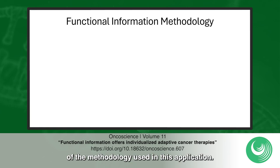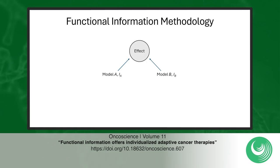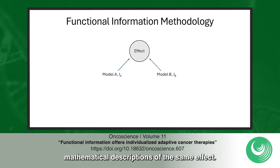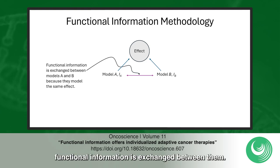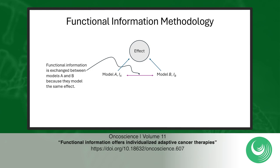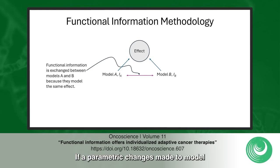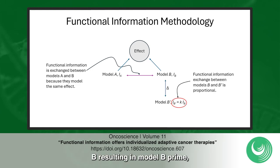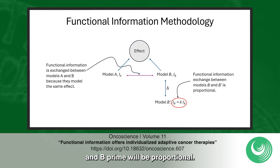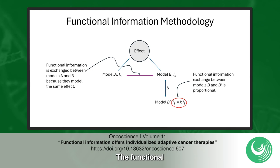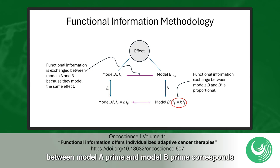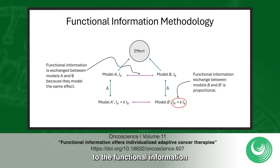Here's an overview of the methodology used in this application. Models A and B provide mathematical descriptions of the same effect. Therefore, functional information is exchanged between them. If a parametric change is made to model B resulting in model B', the functional information relationship between models B and B' will be proportional. The functional information relationship between model A' and model B' corresponds to the functional information exchange between models A and B.